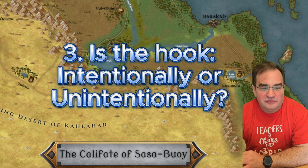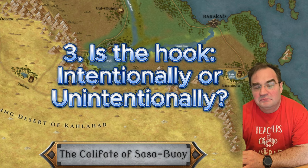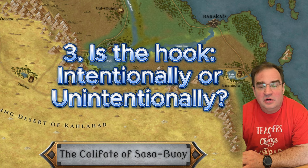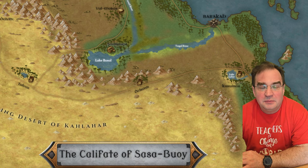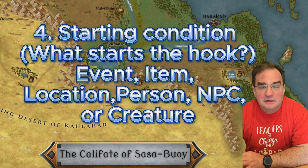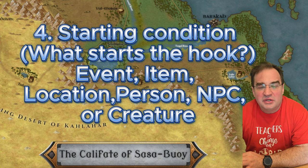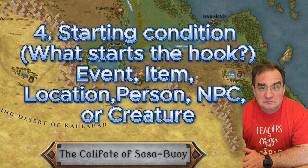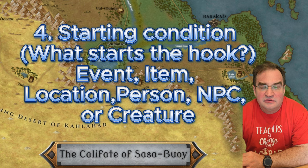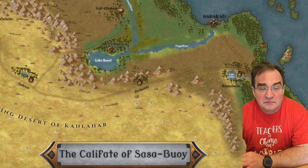Now we look at the hook itself. The hook can happen intentionally or unintentionally — for my example I'm going to use unintentionally. Then I'm going to set a starting condition, meaning what kicks off the hook. The options are an event, an item, a location, or a person such as a party member, an NPC, a creature, or a monster. I'm going to choose NPC for this one.